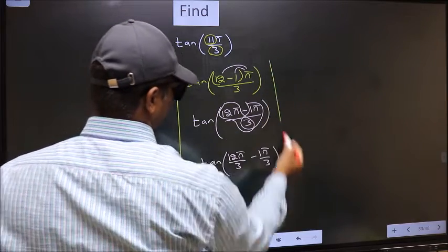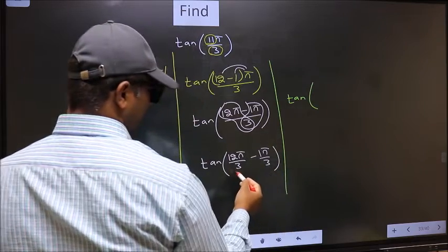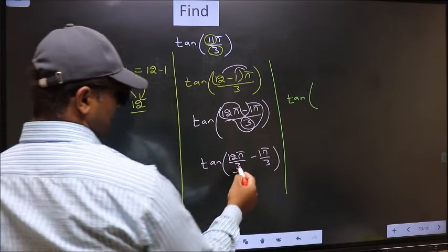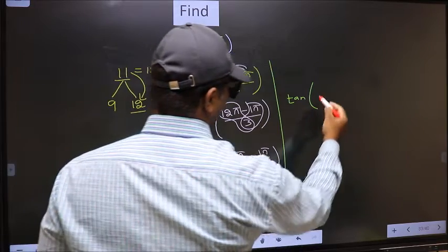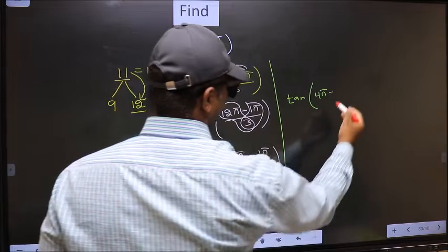Next, tan. Now here you should cancel, 3 ones, 3 fours. So we get 4π minus this, no change.